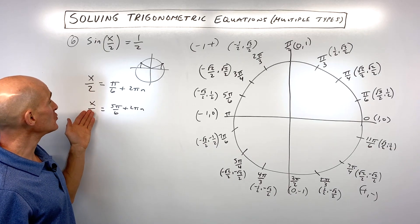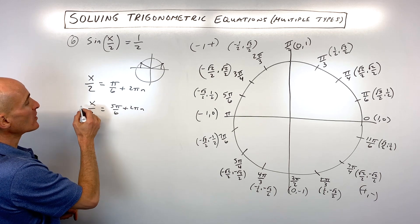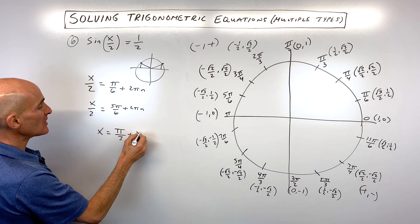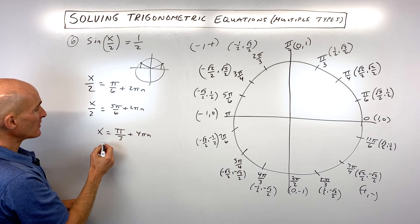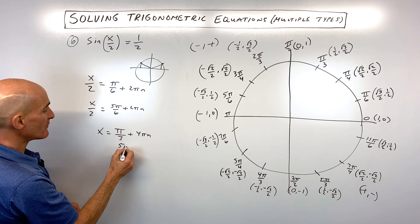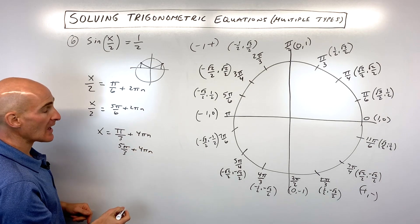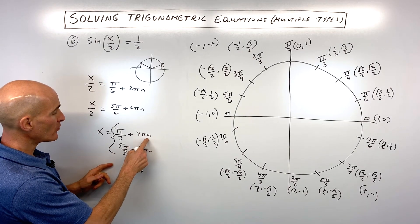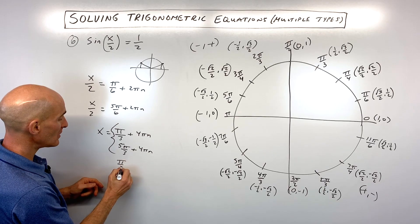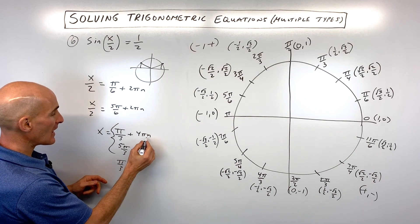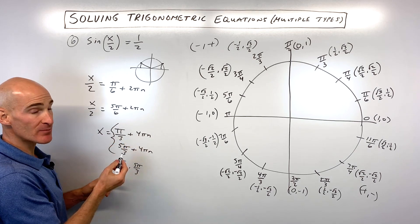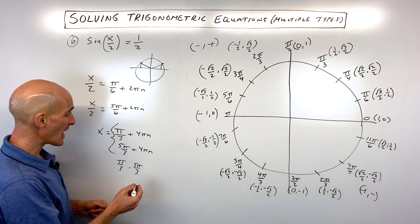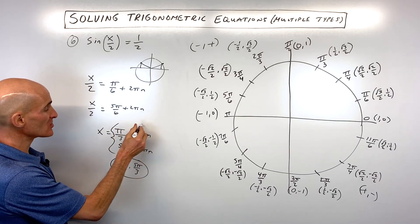To solve for x, multiply everything by 2: x = π/3 + 4πn and x = 5π/3 + 4πn. This is the general solution. For angles between 0 and 2π, set n = 0 to get π/3 and 5π/3. Setting n = 1 gives 4π + π/3 and 4π + 5π/3, both exceeding 2π, so those are the only solutions.